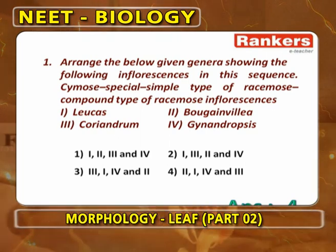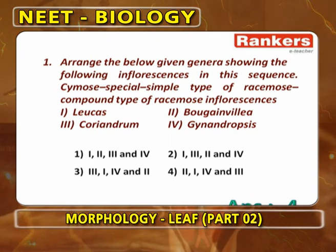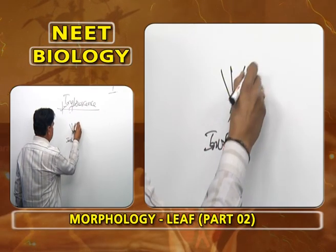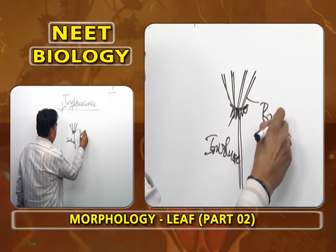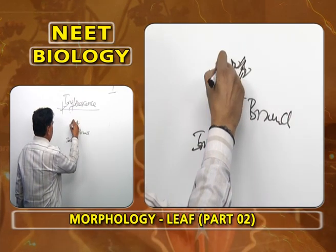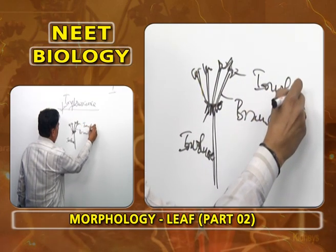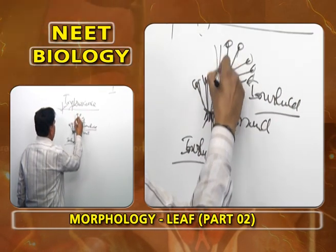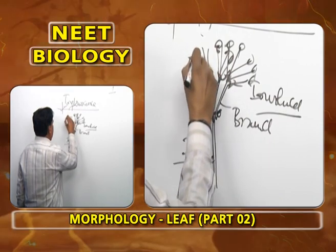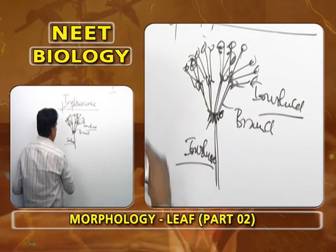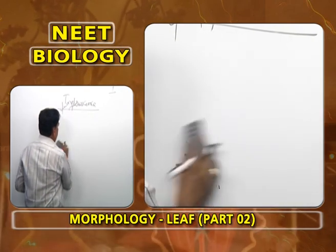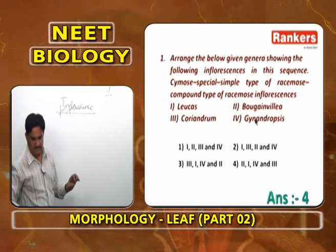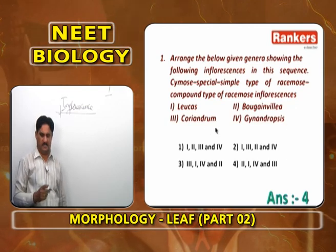Compound means peduncle is branched. The peduncle grows and stops its growth. Bracts unite to form an involucre. From the axils of the involucre bracts, instead of flowers, branches come. At the tip of the branches, again all the bracts unite to form an involucel. From the axils of the involucel bracts, you find many pedicellate flowers opening in centripetal manner. So the answer is 2, 1, 4, 3 — Bougainvillea, Leucas, Gynandropsis, Coriandrum.